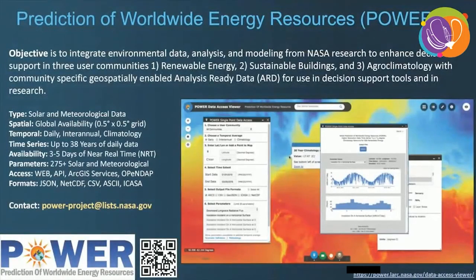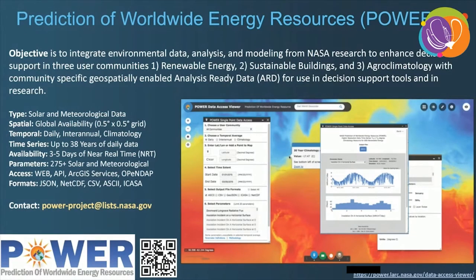NASA's Prediction of Worldwide Energy Resources, or POWER, was initiated to improve upon the current renewable energy dataset and to create new datasets from new satellite systems. POWER provides geospatially enabled analysis-ready data, which ranges from 1981 to the current date and consists of over 275 meteorological and solar energy parameters at four temporal levels. The Data Access Viewer supports the download of data products from POWER's ArcGIS image services and API through a simplified user interface.